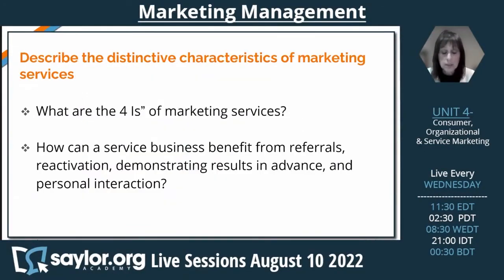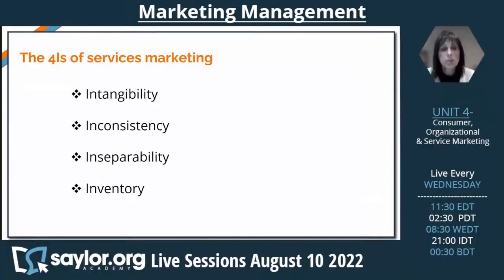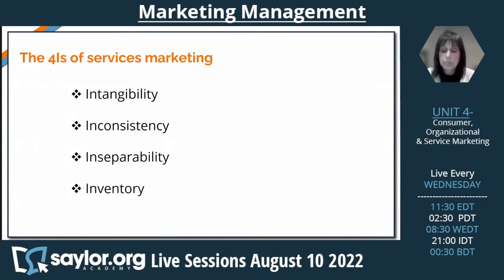Moving on to the final learning outcome for Unit 4, we'll describe the distinctive characteristics of marketing services, looking at the four I's of marketing services and how a service business can benefit from referrals, reactivation, demonstrating results in advance, and personal interaction. Services differ in many ways from tangible goods. The first I refers to intangibility — a service cannot be touched, we can't hold it or see it; it's much more vague.